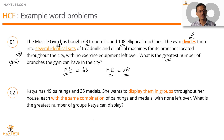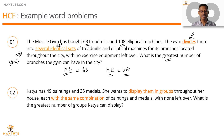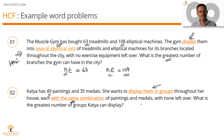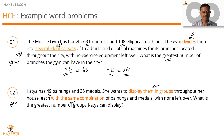Question 2 — hit the pause button, read the question slowly. Katya has 49 paintings and 35 medals. She wants to display them in groups throughout her house, each with the same combination of paintings and medals, with none left over. What is the greatest number of groups that Katya can display? She's breaking them into smaller parts, making identical sets — each group has the same combination. That tells us this is a HCF question.